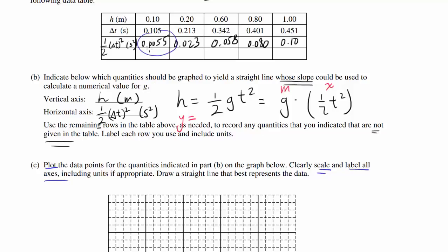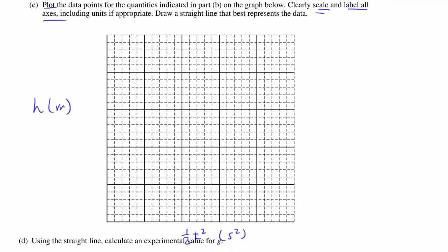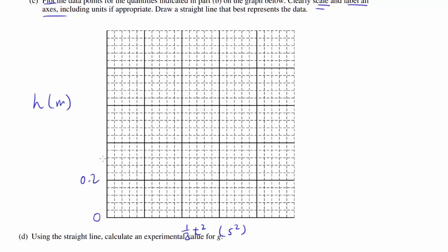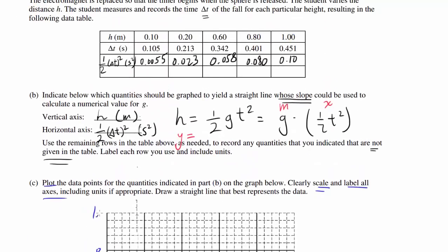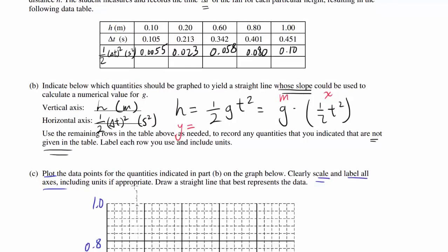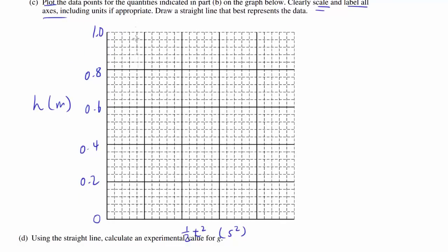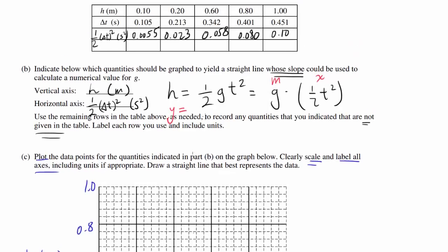We're going from 0.0055 all the way to 0.1 horizontally, and vertically we're going from 0.1 to 1. Let's label vertically: 0, 0.2, 0.4, 0.6, 0.8, 1.0. Horizontally we can go from 0 to 0.1 using steps of 0.02: 0.02, 0.04, 0.06, 0.08, and 0.10.